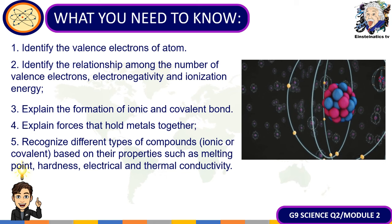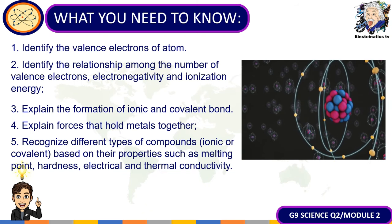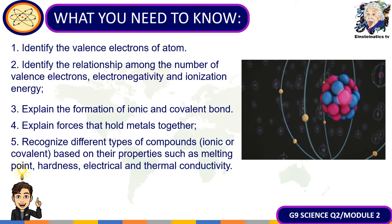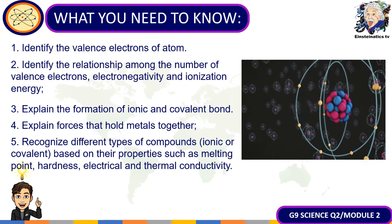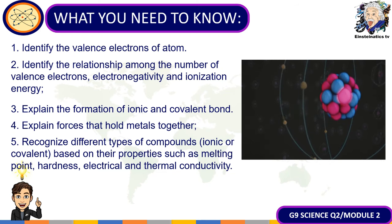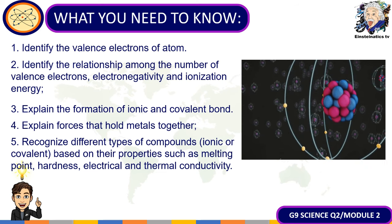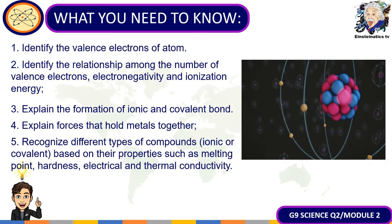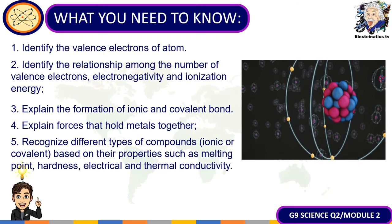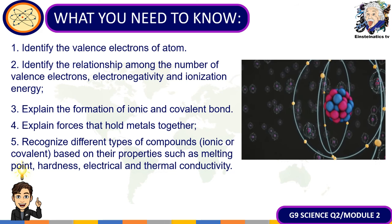Here are our main objectives for today's lesson. First, we will identify what valence electrons of an atom means. We will also identify the relationship of the number of valence electrons to electronegativity and ionization energy. We will explain how ionic and covalent bonds are formed, explain what forces hold metals together, and identify the different kinds of compounds — ionic or covalent — based on properties such as melting point, hardness, electrical, and thermal conductivity.